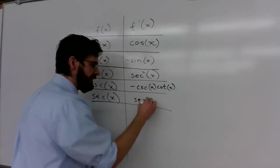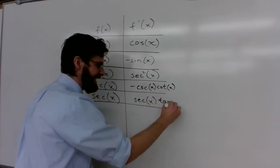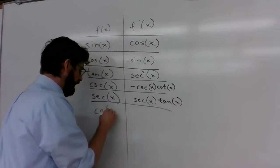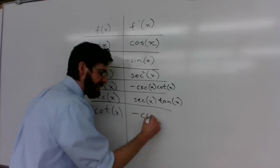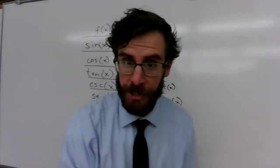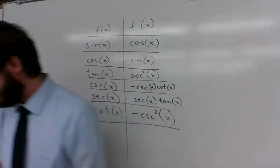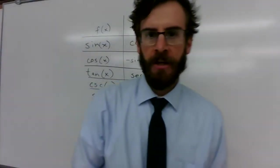Secant of x, its derivative is secant of x tangent of x. And then cotangent that's the one I was thinking of. It's negative cosecant squared of x. Alright. I'm going to double check just because I'm not trusting my brain right now. Looks good.